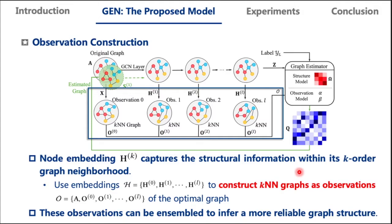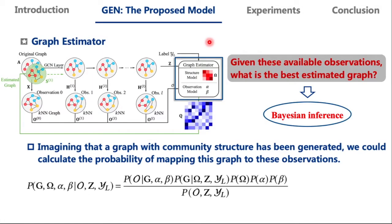Specifically, we use node embedding H to construct KN graphs as observations of the optimal graph, where O is the adjacency matrix. This observation reflects the optimal graph structures from varied views and can be assembled to infer a more reliable graph structure. Until now, the question we want to answer is: given this available observation, what is the best estimated graph for GCN?